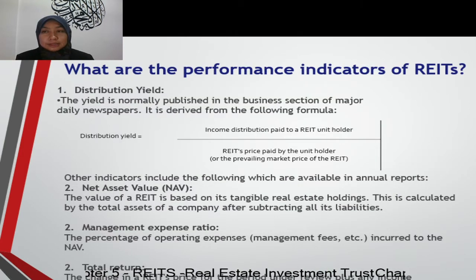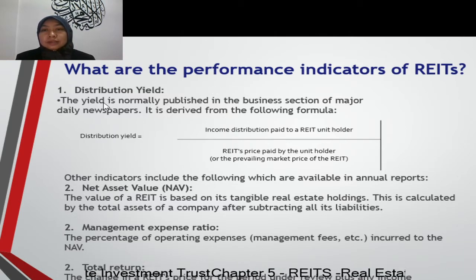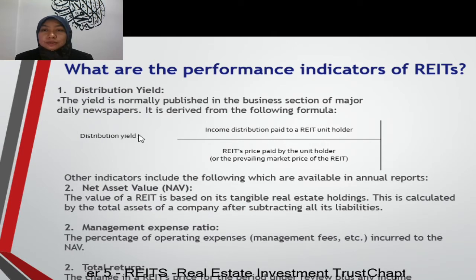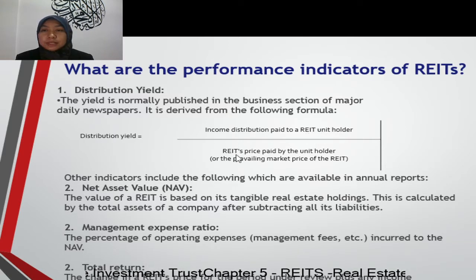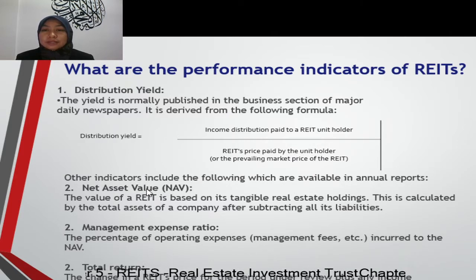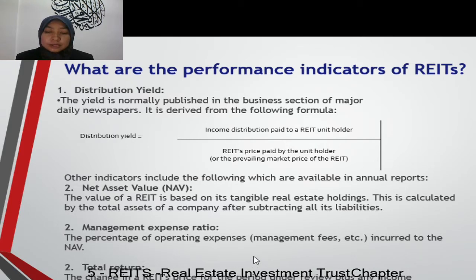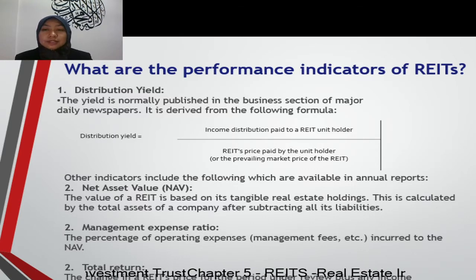What are the performance indicators of REITs? Distribution Yield — the dividend. The yield is normally published in the business sections of major daily newspapers, derived from the formula: Distribution Yield equals income distribution paid to a REIT unit holder divided by the REIT price paid by the unit holder. Other indicators include net asset value, management expense ratio, and total return — the change in REIT price for the period plus any income distributions received. For investors, they are mainly concerned with the dividend they receive and also the current value of REITs.